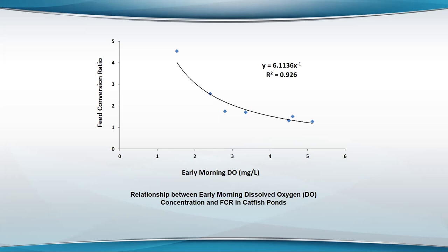The journal insisted it had to be based on what the fish actually ate, but putting that aside, I'm going to show it anyway because that's what a farmer would say. As the early morning dissolved oxygen concentration increased, we got better feed conversion. Ponds that had early morning dissolved oxygen concentrations of about three milligrams per liter and greater had the best feed conversion.